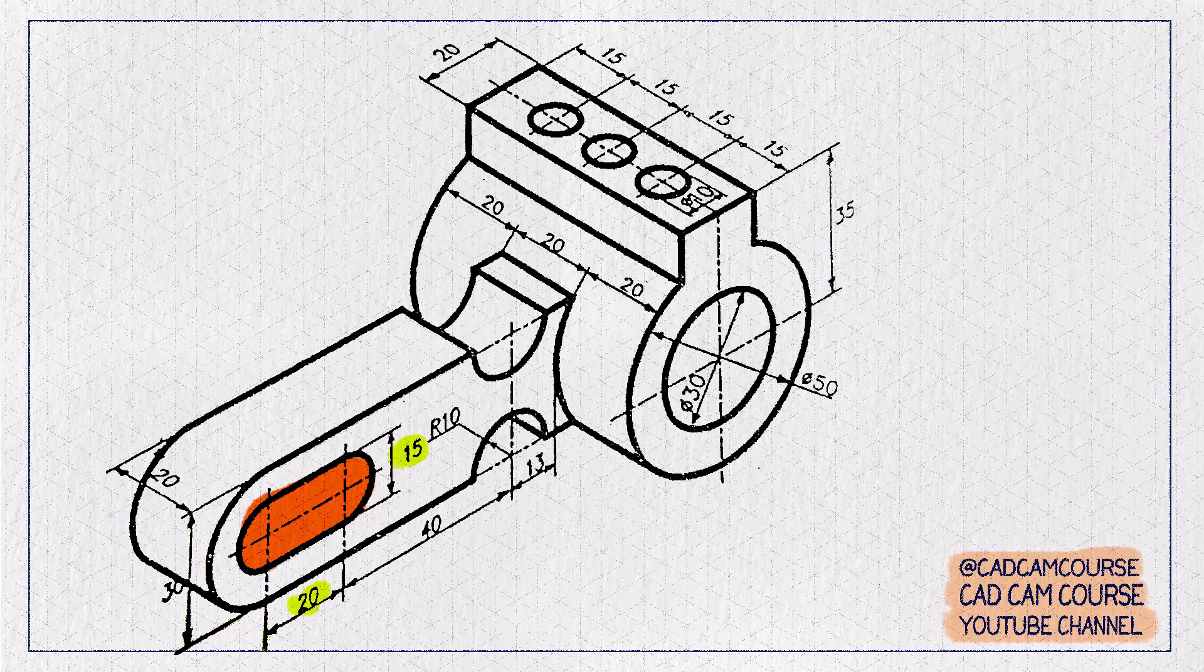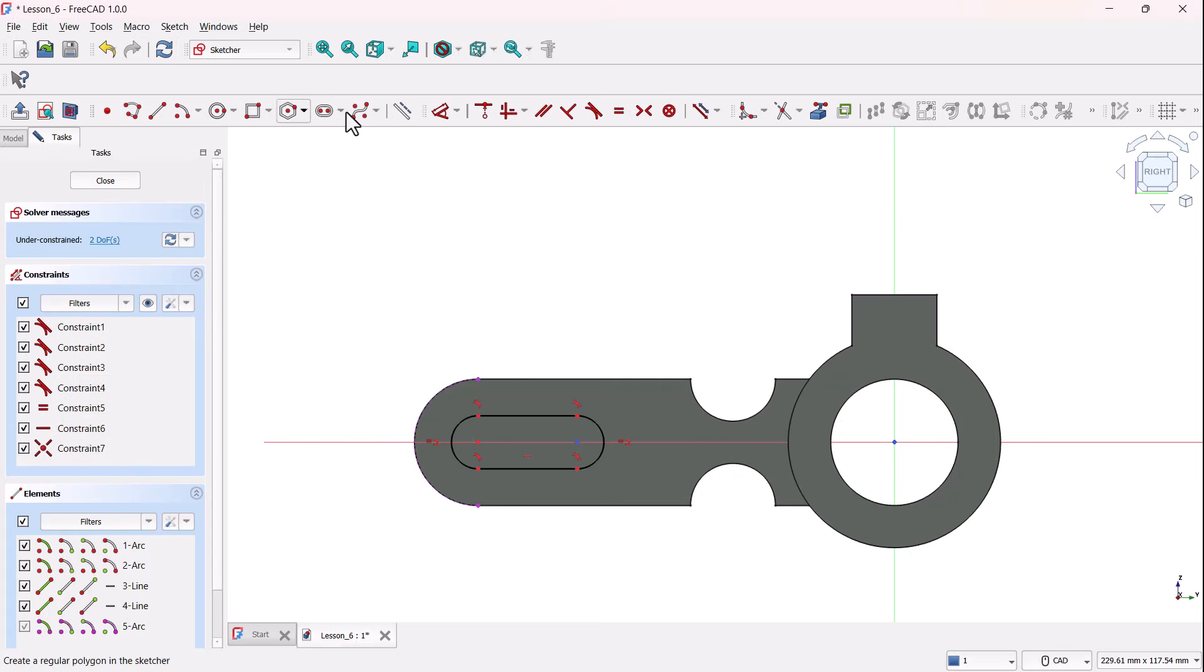Now, from our reference sketch, the distance between these centers of slot should be 20 millimeters. So, grab the dimension tool, click both points, and key in 20 millimeters.